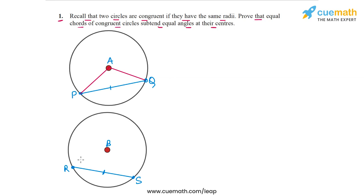So we join P and Q to A, and we will join R and S to B. So what we have to show is that this angle PAQ and this angle RBS, they are equal.